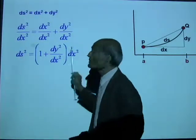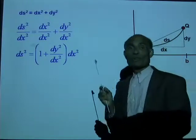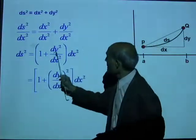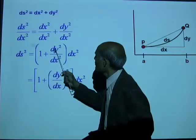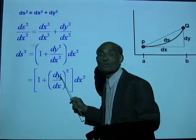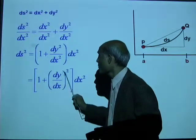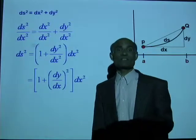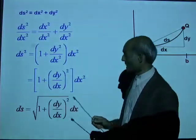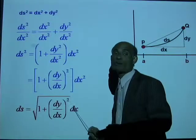ds is the length of the arc, which is approximately equal to the length pq. And when p and q are very, very close to each other, they are actually equal to each other. Now let's rewrite this. This will be 1 plus dy by dx all squared. What does dy by dx stand for? The derivative of y with respect to x. So ds squared is 1 plus dy by dx all squared, multiplied by dx squared. Therefore, to find ds, take the square root of both sides. That gives you ds equal to square root of 1 plus dy by dx all squared, dx.